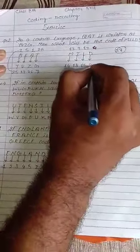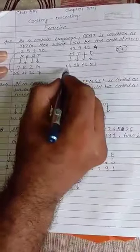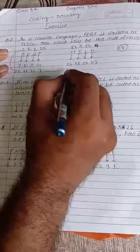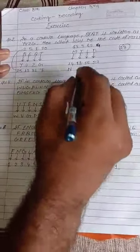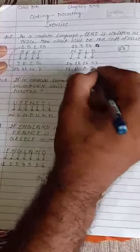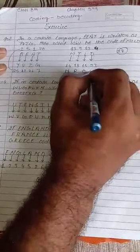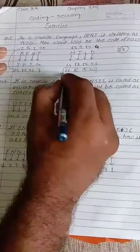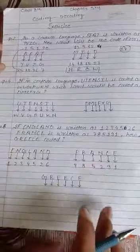What is the alphabet at position 14? That is N. At position 18, that is R. At position 15, that is O. And at position 23, that is W. So our answer will be NROW.